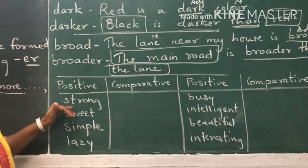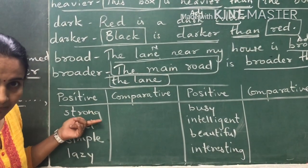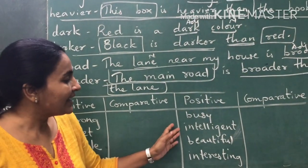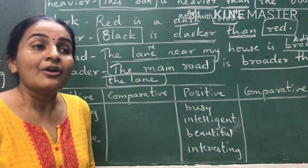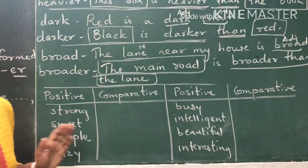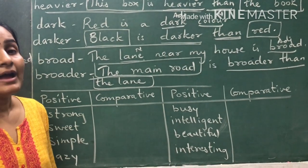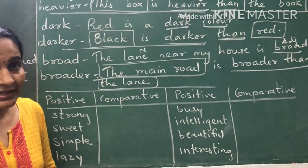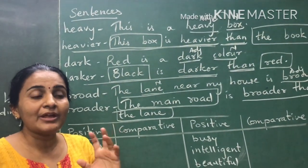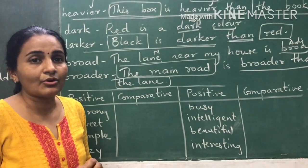Some other words to try for positive and comparative degree: strong, sweet, simple, lazy, busy, intelligent, beautiful, interesting. Try to find out at least twenty more adjectives and put them into positive degree and comparative degree. Frame simple sentences to make your concepts clear — that will be very helpful.